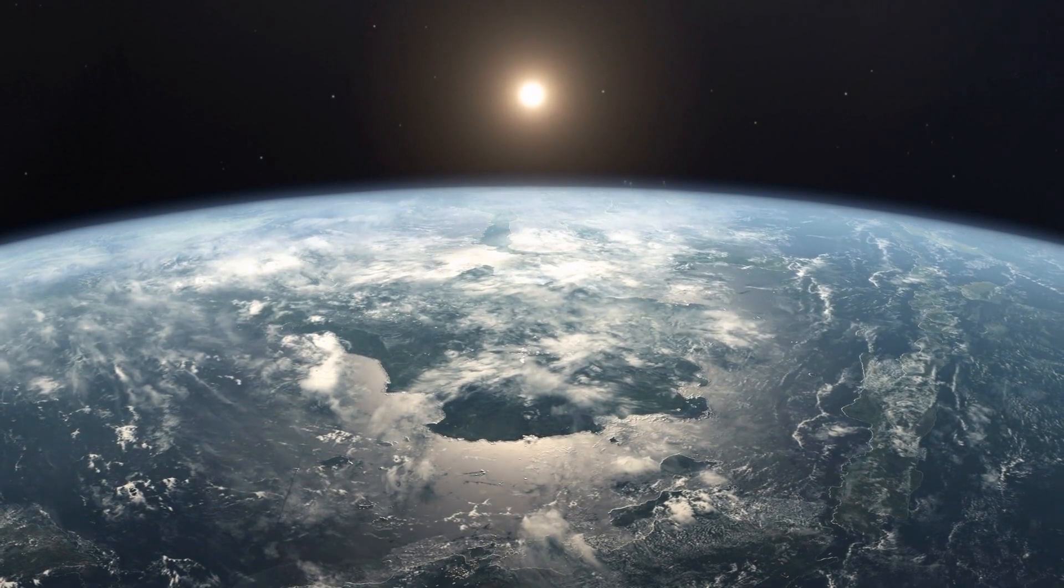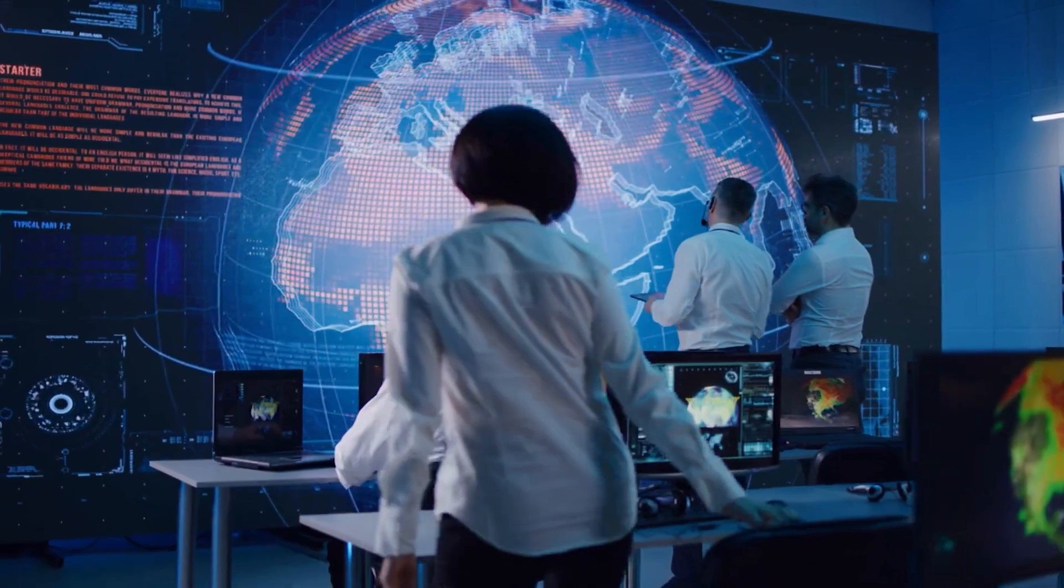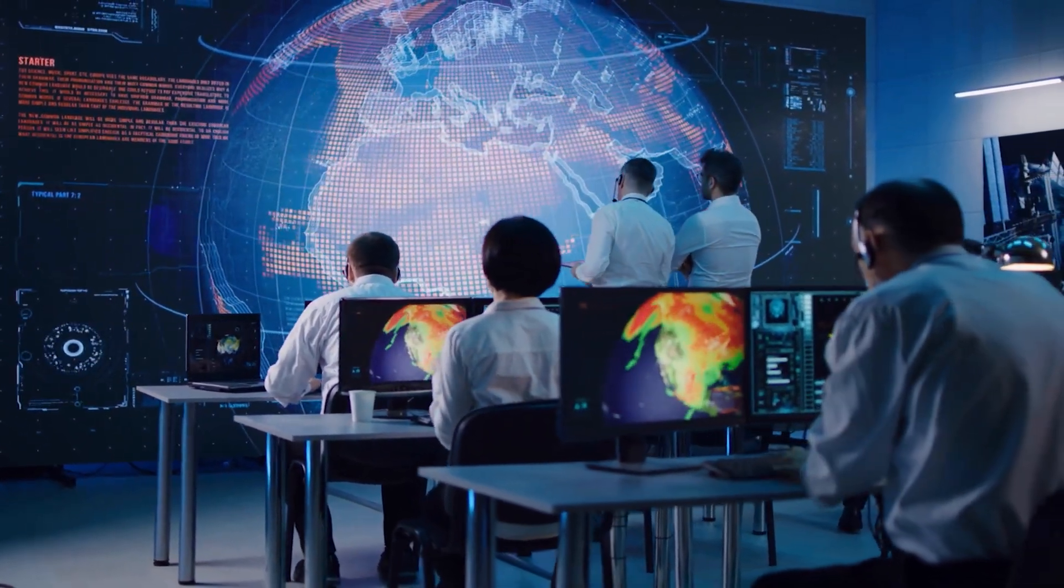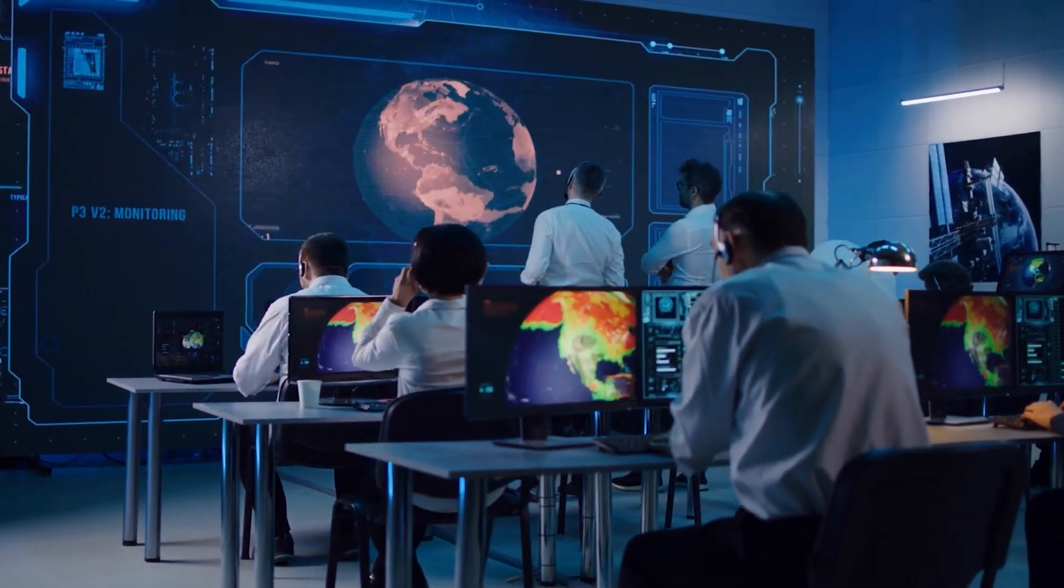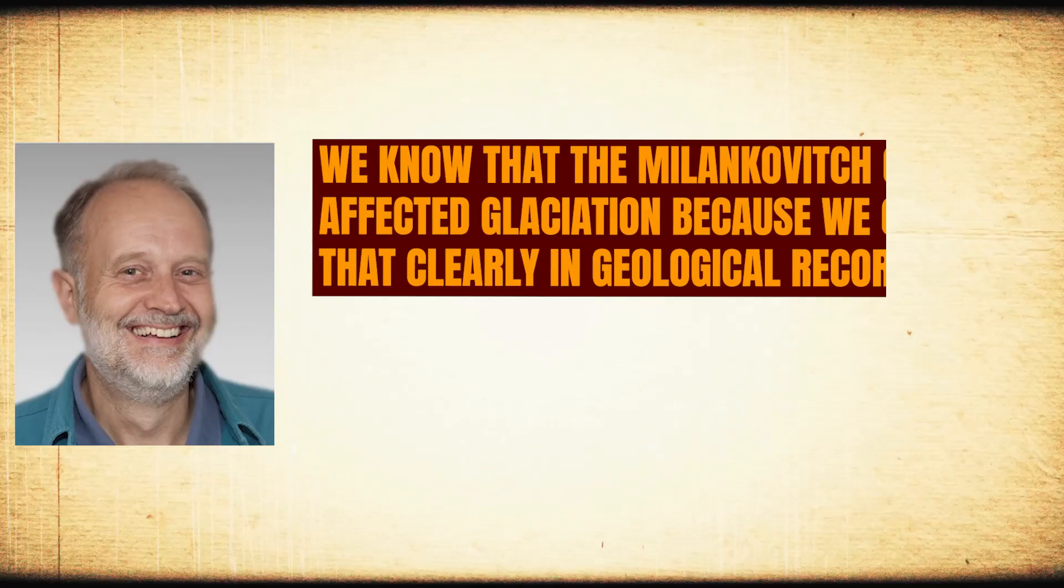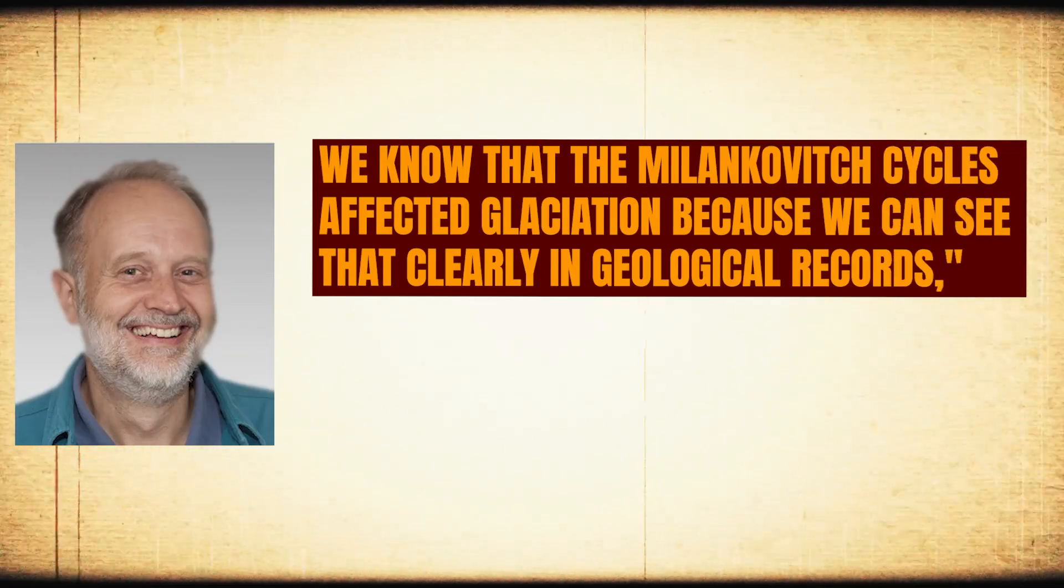The most significant proof that Milankovitch cycles dictate Earth's climate is that the astronomical calculations match what geologists see when they date layers of sediments found in areas which in the past formed the bed of the ocean. Maliverno said, "We know that the Milankovitch cycles affected glaciation because we can see that clearly in geological records."